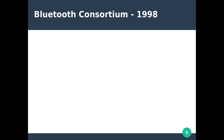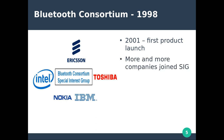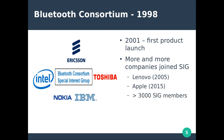Initially the founding group of the Bluetooth Consortium consisted of five corporations: Ericsson, Intel, Toshiba, Nokia, and IBM, forming something called the Special Interest Group (SIG). In 2001 the very first Bluetooth product hit the market. More and more companies started joining the SIG — recent examples include Lenovo since 2005 and Apple since 2015, and as of now more than 3,000 companies have joined the Special Interest Group.